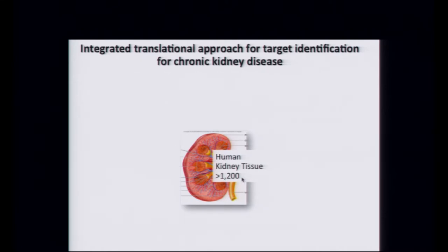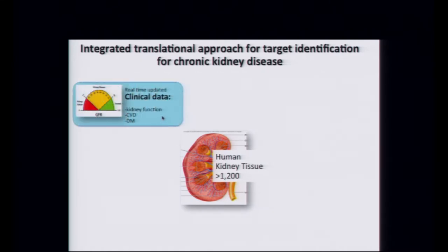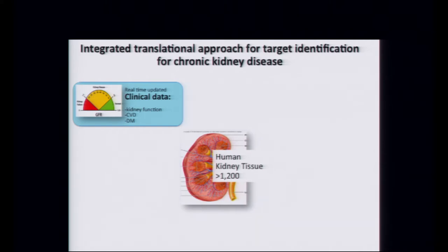The first point is that causal variants should be localized in the regulatory region in the kidney. To understand that, my lab has developed a fairly large kidney biobank — more than 1,200 samples at last count. This is updated with clinical data in real time. We mostly collect these from the unaffected part of tumor nephrectomies. Kidney disease incidence in those patients is fairly high — about 20% — since common conditions like diabetes and hypertension are prevalent in people getting nephrectomies, typically 58-year-old males.